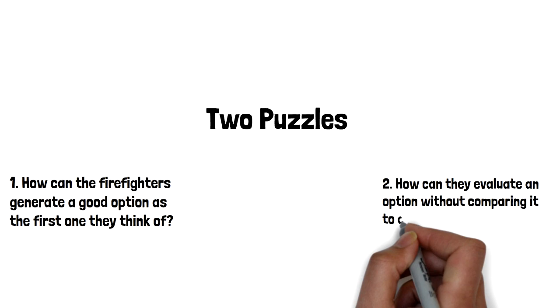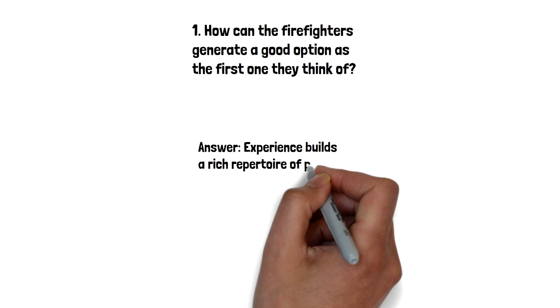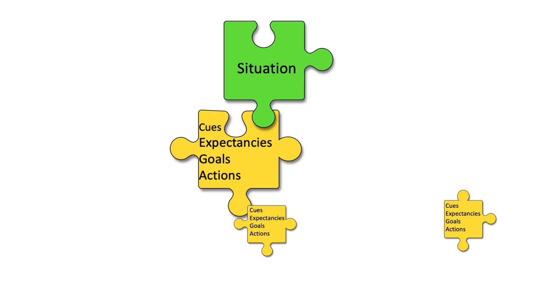But we had carefully collected interview protocols, and we looked at our, went through our transcripts. And the answer to the first puzzle, how you can generate a good option as the first one you think of, is that's what experience buys you. That's what 10, 15, 20 years of experience buys you. You have all these patterns you've built up, all these prototypes. When you encounter a situation, you say, I know how to handle it. And so the first one you think of is usually going to work.